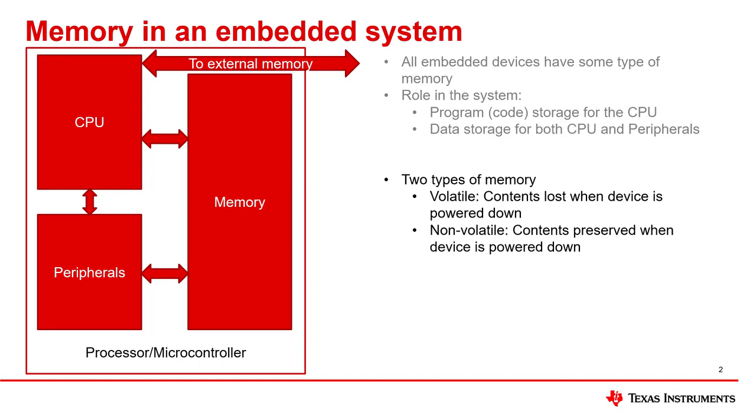For non-volatile memory, the memory contents are preserved when the device has no power. Some examples of volatile memory are SRAM, DRAM, and caches. Some examples of non-volatile memory are flash, FRAM, and ROM. Today, I will be going more in-depth on RAM.